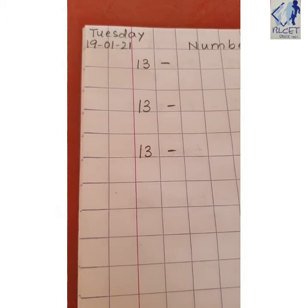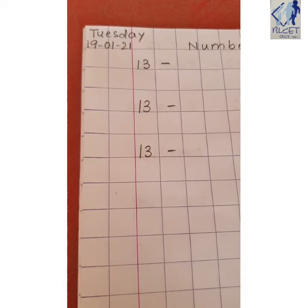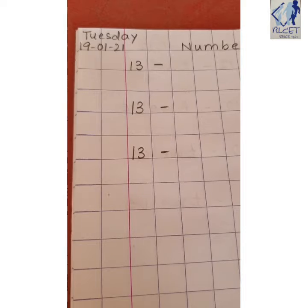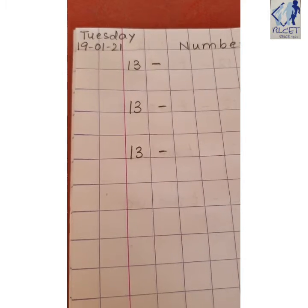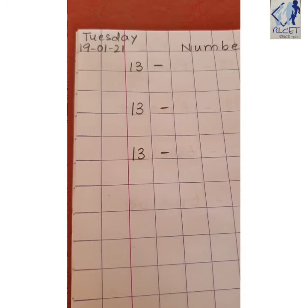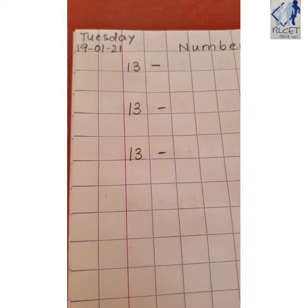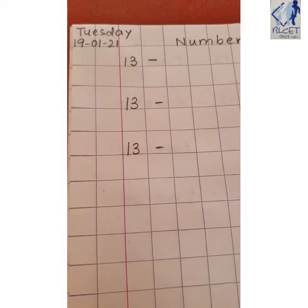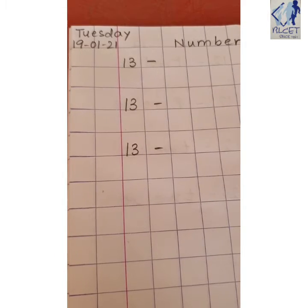And which is the date? Today's date is 19th January 2021. So we have written 19-19 for the date, dash 01 for the month, dash 21-21 for the year.